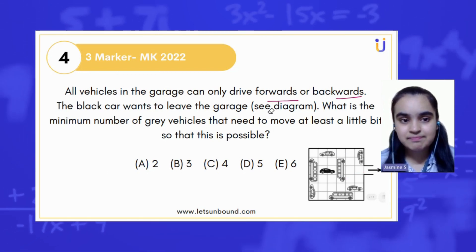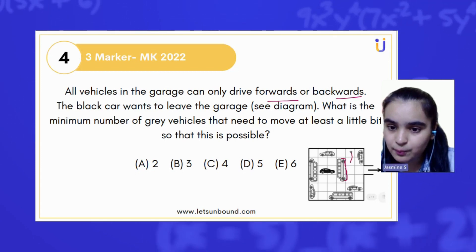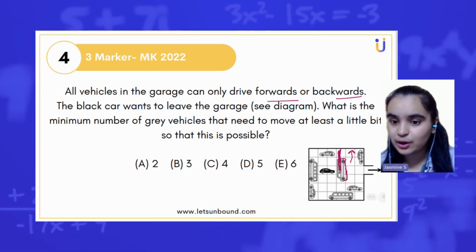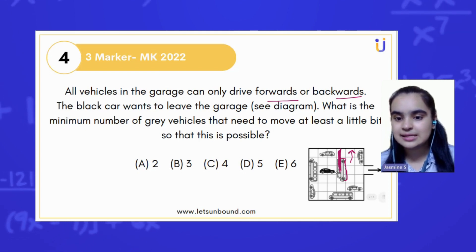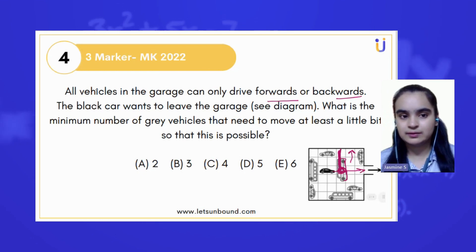As you will see, this big vehicle is actually occupying three boxes. So if we are going to shift it upward, that means these three boxes will be occupied and it will not make sense because the black car has to move from this box.